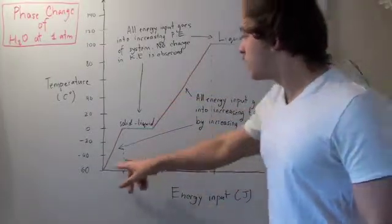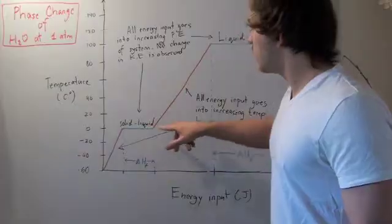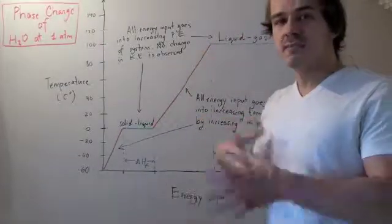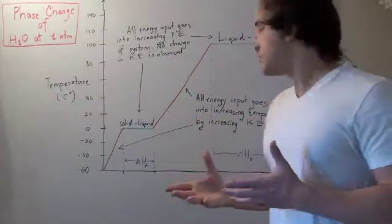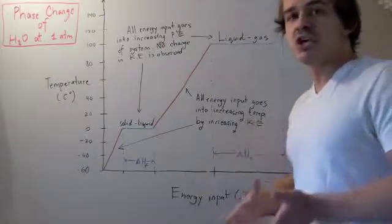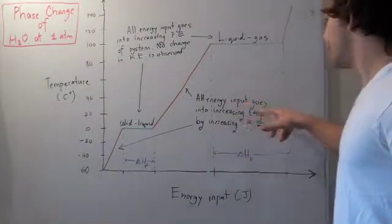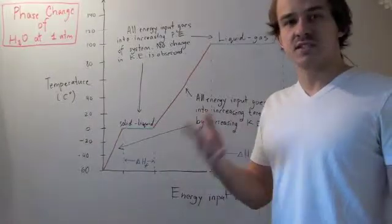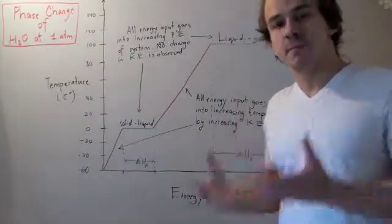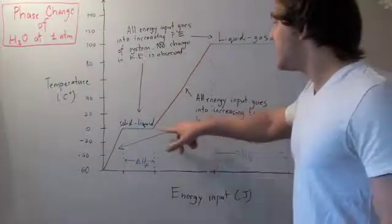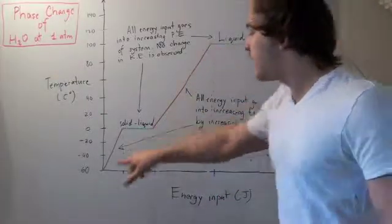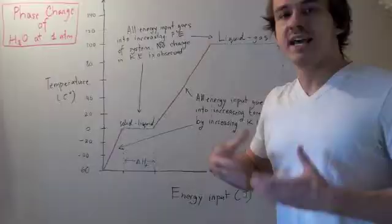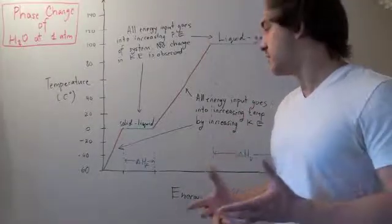When we talk about going from this guy to this guy or from this guy to this guy, the intermediate phases between the phase changes, we talk about energy input that goes into increasing kinetic energy of the system. Because kinetic energy of the system is what increases temperature, we want to go from zero to 100 and from negative 60 to zero. We want to increase temperature and not the potential energy of the system.